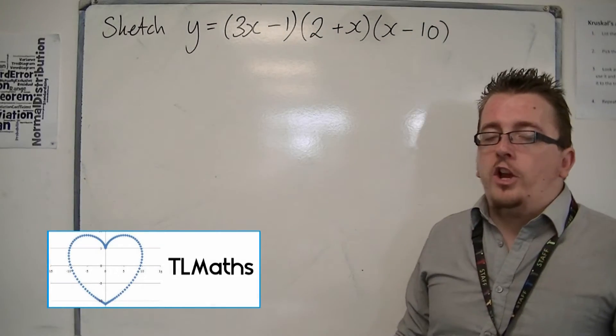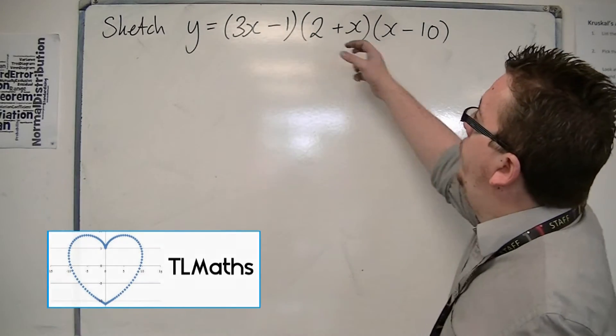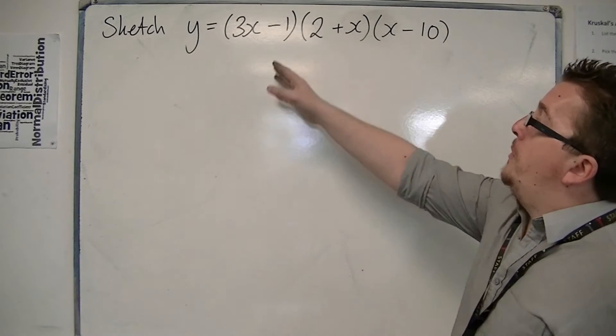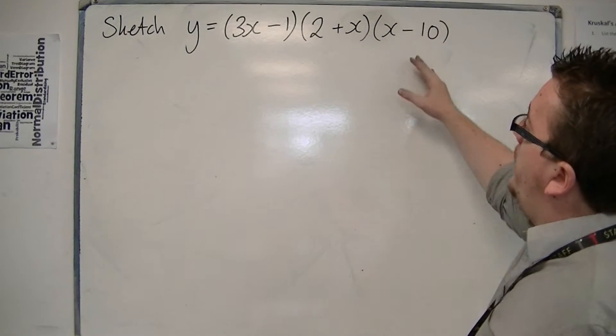Here's another example of sketching a cubic where it's written as three linear terms. We've got 3x minus 1, 2 plus x, and x minus 10.